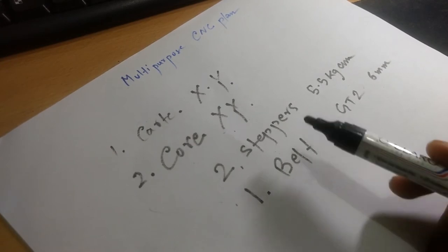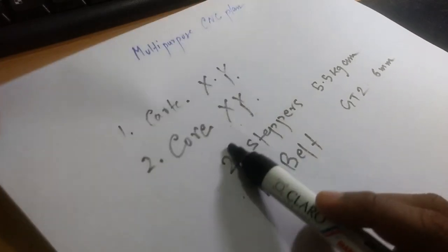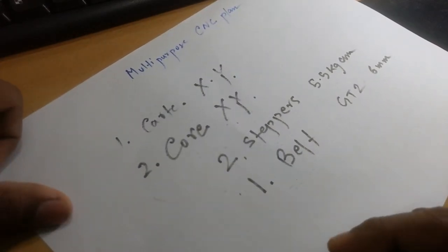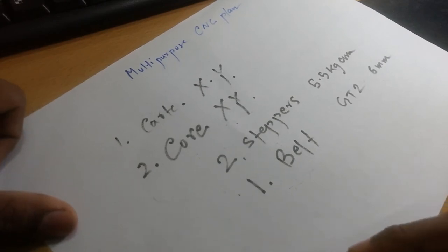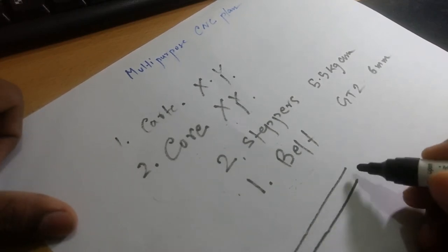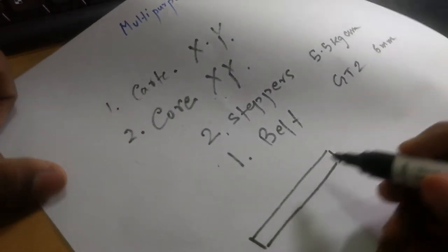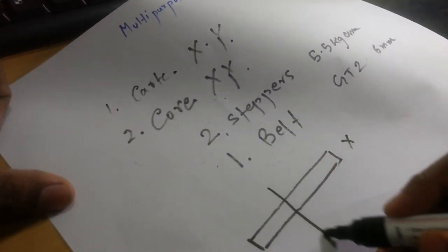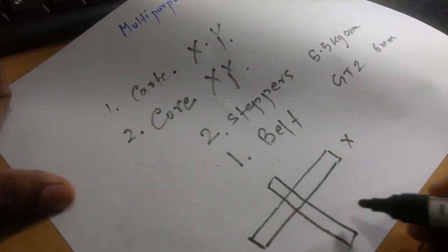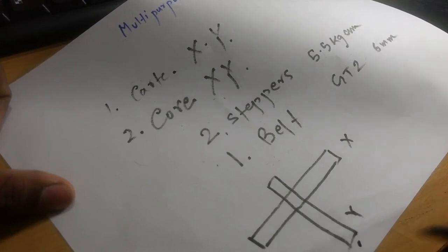Just imagine this is the X axis and here will be my Y axis, and here will be the spindle or any kind of thing that you want to work with.